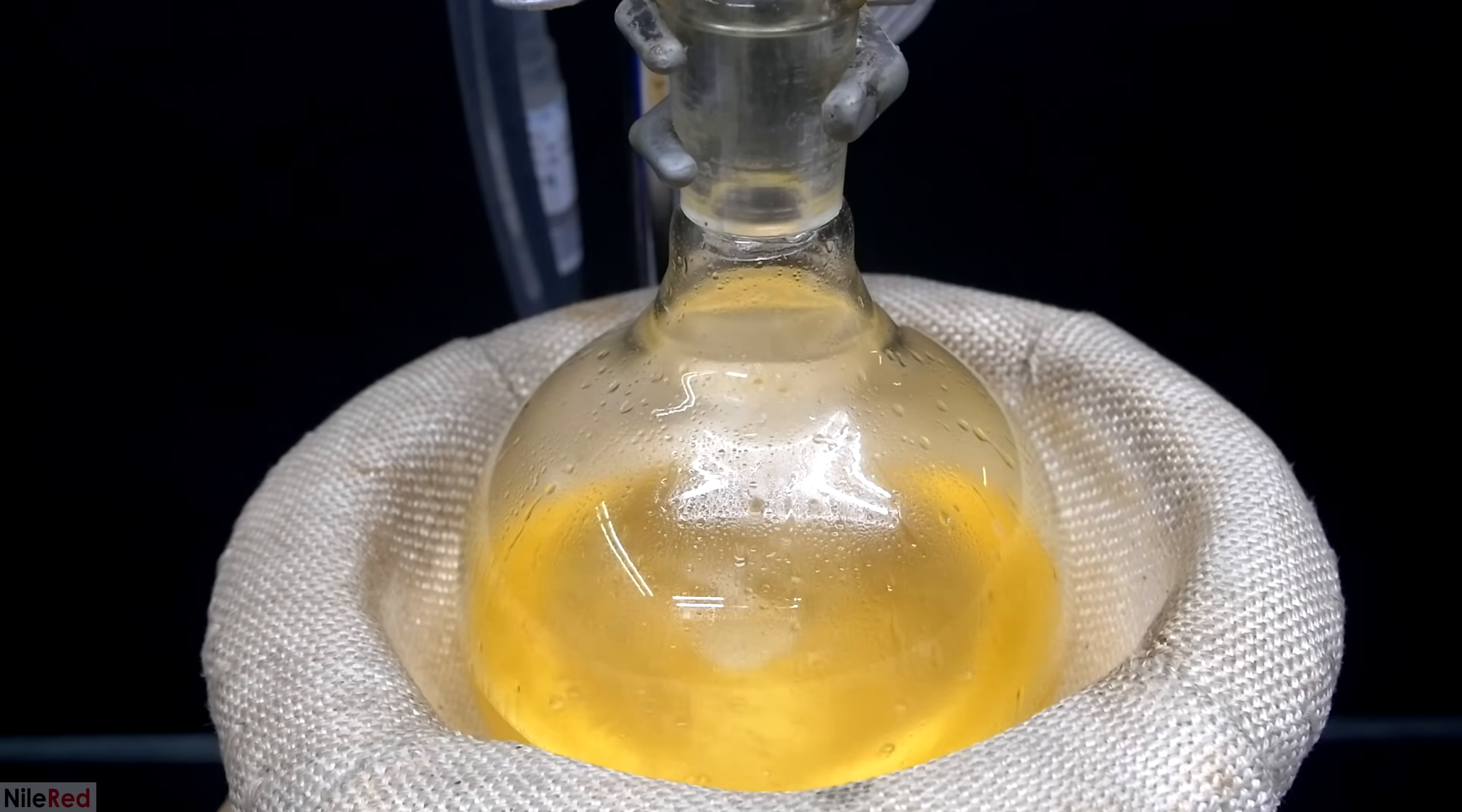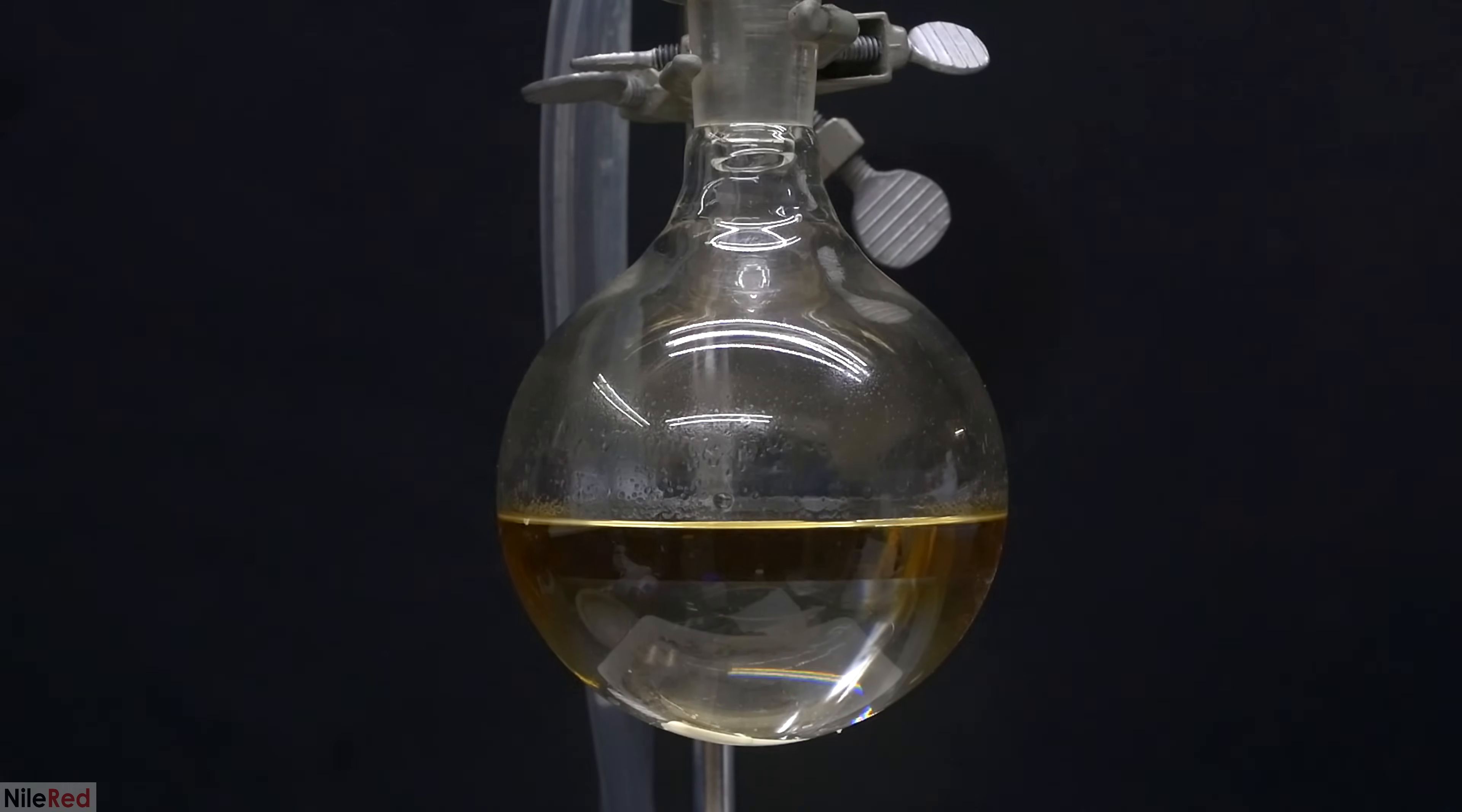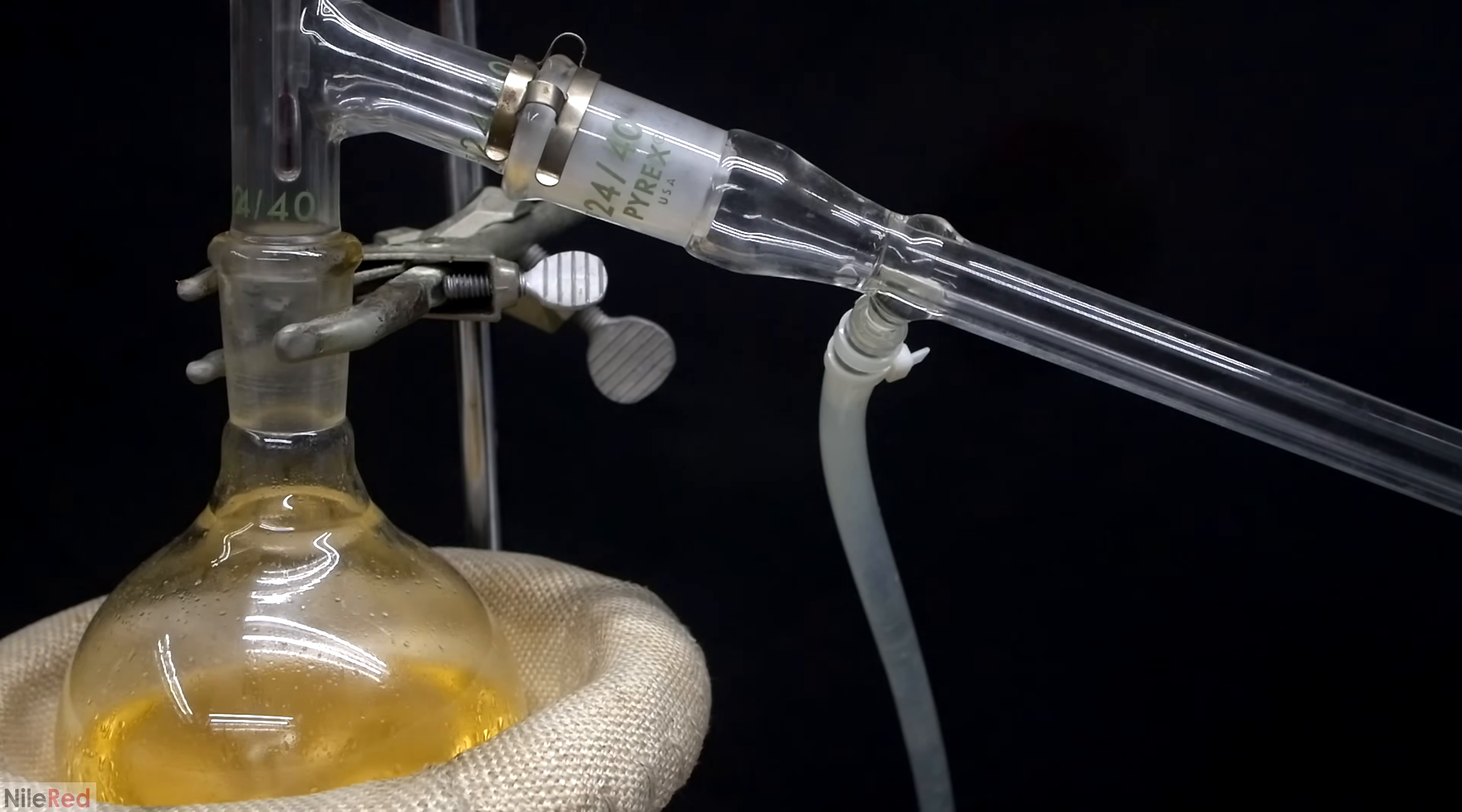After two hours, the reflux is complete, so I take away the heating mantle, and I let things cool down a little bit. When we take a look at the flask from the side, we can see that we have two layers, where the upper layer is our 1-bromopentane. To separate the 1-bromopentane from the reaction mixture, we're going to carry out a simple distillation. Instead of using simple distillation to separate the crude 1-bromopentane, I could have also used a separatory funnel.